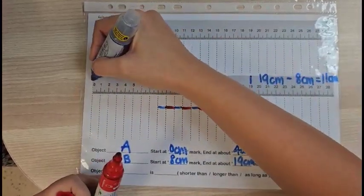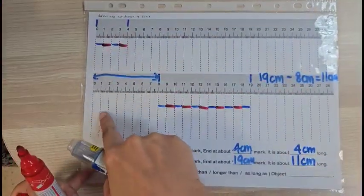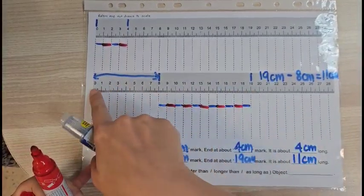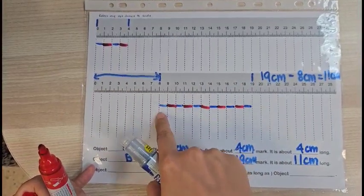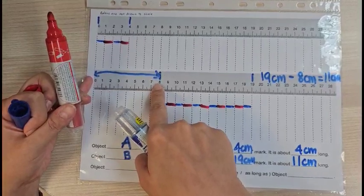So why do I minus the 8 cm? It's because from 0 to 8, I did not use this space at all. So if it was 19, I have 0 to 19, right? But I chose to start at 8, therefore, I need to take away the first 8 spaces which I did not use.